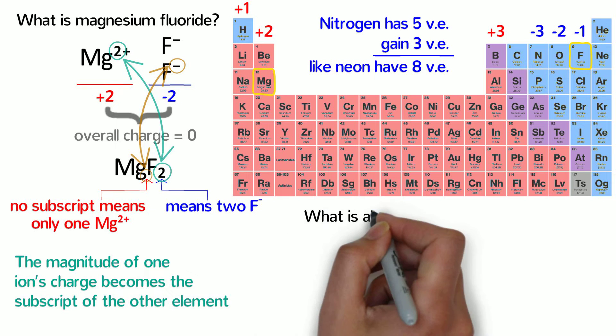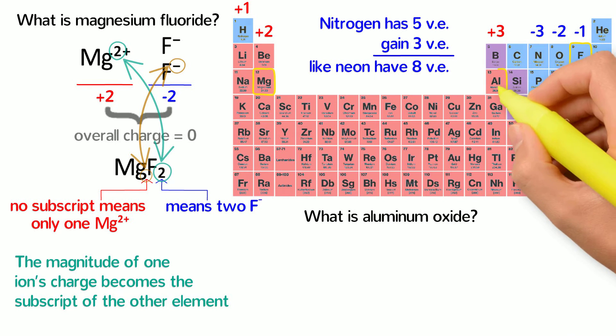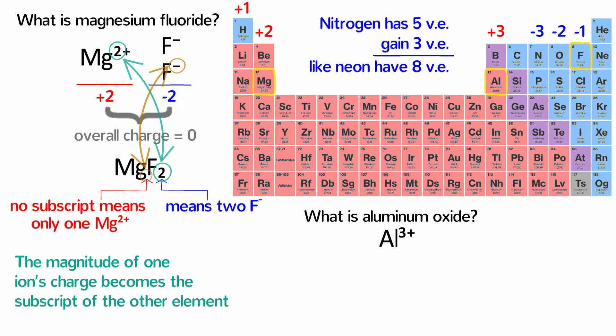Let's try a couple examples. What is the formula of aluminum oxide? Aluminum ions have a positive 3 charge and oxide ions have a negative 2 charge. That means the formula of aluminum oxide is Al2O3. The 2 comes from oxide's charge, and the 3 comes from aluminum's charge.